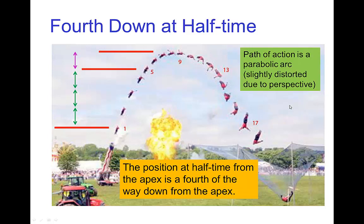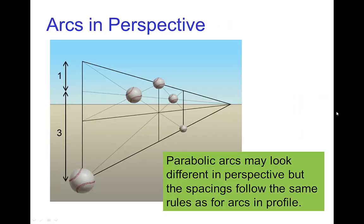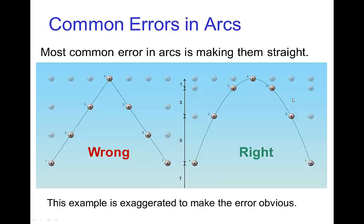Now this picture is a little bit distorted because we're not seeing the motion in profile, so there's a little bit of distortion due to perspective. Now we can account for that. So if we want to do this more carefully, you see the spacings that you have when something goes up into the air and then comes back down. The fourth down at half time would tell you that these positions which are halfway in time between the apex and these two bottom positions should be a fourth of the way down. So this is what the parabolic arc looks like in perspective.